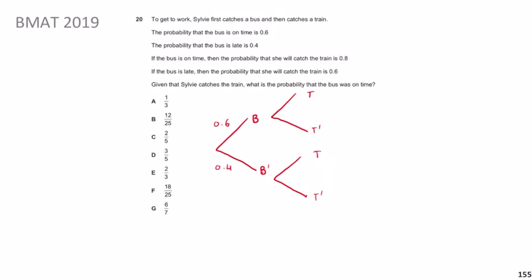The probability the bus is on time is 0.6 and the probability it's late is 0.4. If the bus is on time, the probability she catches the train is 0.8, so the probability she doesn't is 0.2. If the bus is late, the probability she catches the train is 0.6 and not catching it is 0.4. Those pairs add up to one because those are the only two outcomes at each branch.